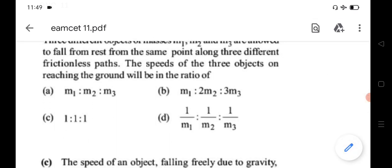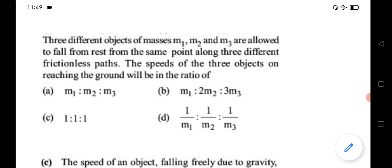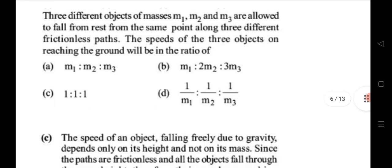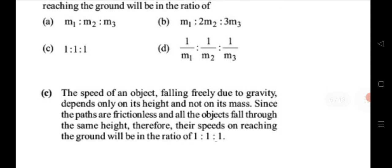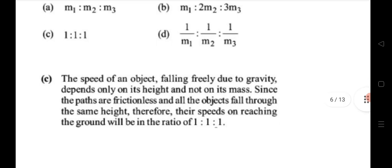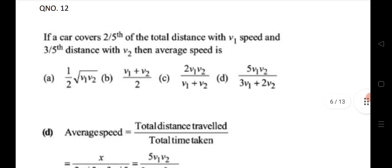Eleventh question: three objects of masses m₁, m₂, m₃ are released from rest from the same height along three different frictionless paths. The speed of falling objects due to gravity depends on height, not mass. Since all paths are frictionless and the objects fall through the same height, their speeds on reaching the ground are in the ratio 1 : 1 : 1.